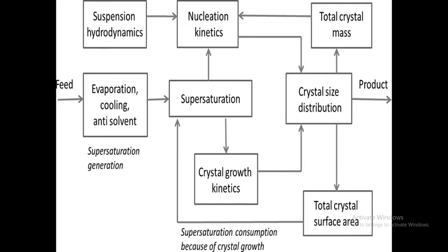This is an example of a population balance model. Feed is entering into the process. Supersaturation is generated by evaporation, cooling, or anti-solvent. Evaporation is the phase change from liquid to vapor. Cooling means reducing the temperature. Anti-solvent is a solvent in which the compound is less soluble. Usually a solvent or anti-solvent mixture is a good approach for obtaining crystals, especially for organic compounds.